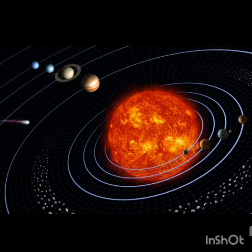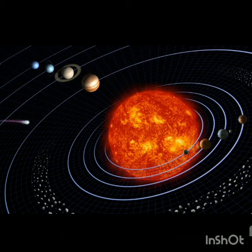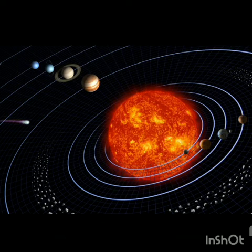Saturn is the sixth planet from the Sun. It was thought to be the farthest planet until the telescope was invented, after which it was found to be very far from Earth. Uranus and Pluto were discovered after this.